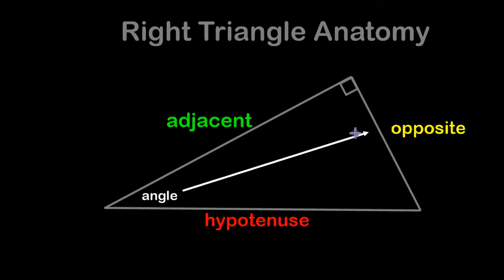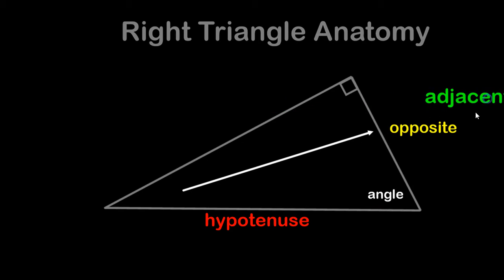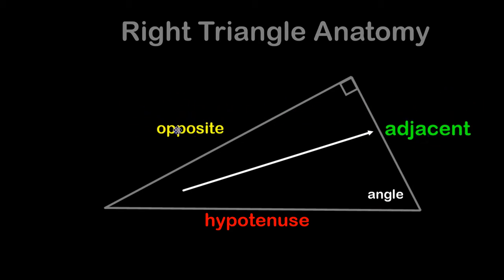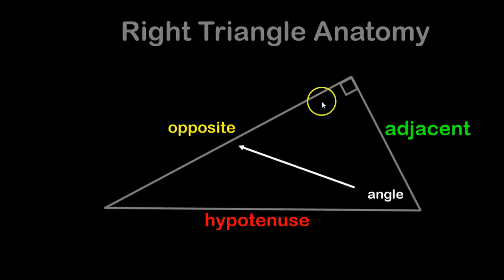If here's the angle, straight across from it is the opposite side. If I move the angle over to here, that switches the adjacent and opposite — the adjacent will now be over here and the opposite will be over there. Remember the opposite side is always the side directly across from the angle. Notice the hypotenuse doesn't change at all — it's always opposite the right angle.